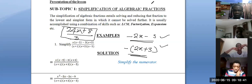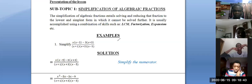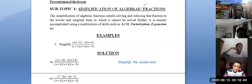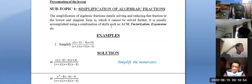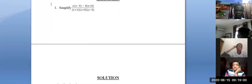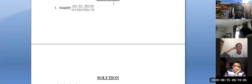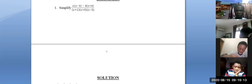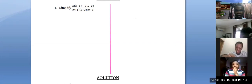Let's look at Example 1 — it says simplify this fraction. When you examine this fraction carefully, you will discover that there is nothing common between the numerator and the denominator upon first examination. So what do you do?